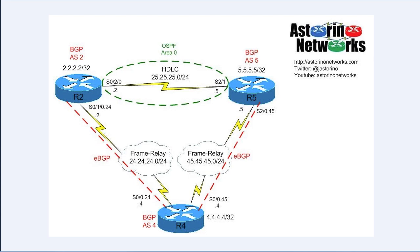Router 2 is one remote site and Router 5 is another remote site. They have two ways to reach each other: first through Router 4 via a Frame Relay service provider cloud, and second through a backdoor link running HDLC as a point-to-point serial link. On the routing side, the backdoor link runs OSPF as the IGP, while between Router 2 and 4, and Router 4 and 5, we're running EBGP. Router 2 is AS2, Router 4 is AS4, and Router 5 is AS5.